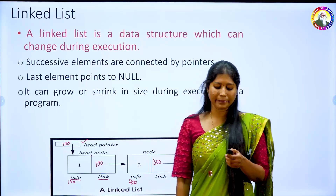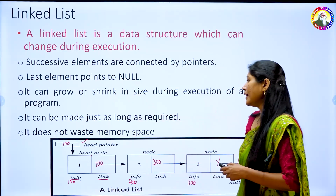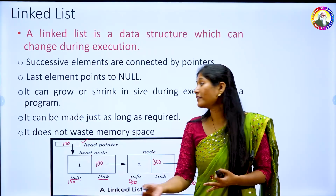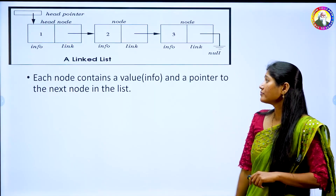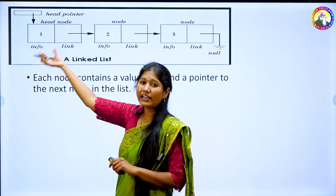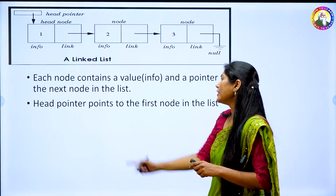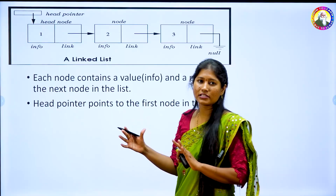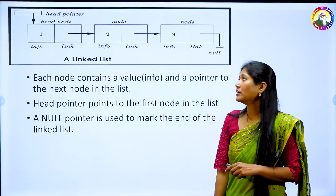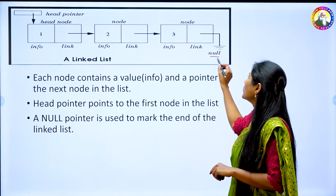The linked list can be made just as long as required. It does not waste memory space because there is no need to decide the size beforehand — whenever I want it, I allocate the memory. Each node contains a value and a pointer to the next node. The information field holds the data and the link field holds the address of the next sequential element. The header pointer points to the first node in the list. The last element's node will have a null address, and a null pointer is used to mark the end of the linked list.